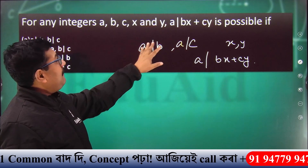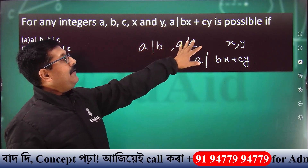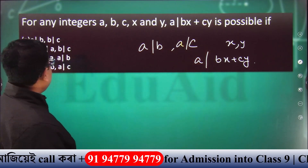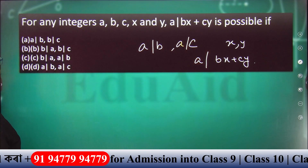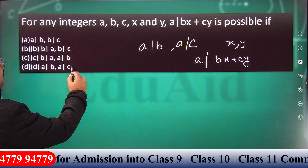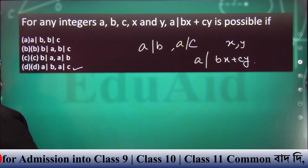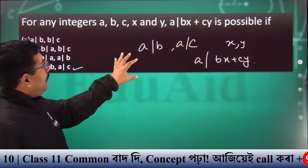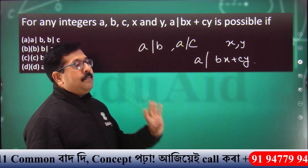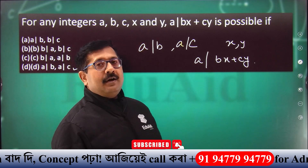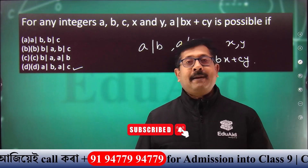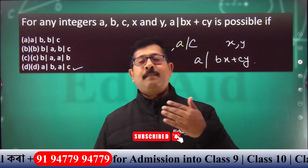So, A divides B and A divides C. Our correct option is: A divides B and A divides C. So, it is the elementary properties of divisibility.